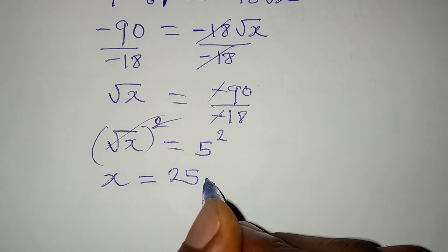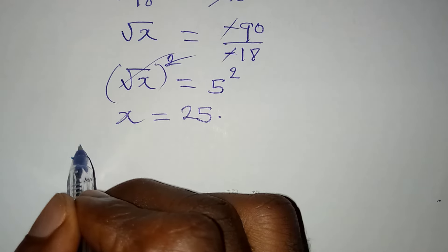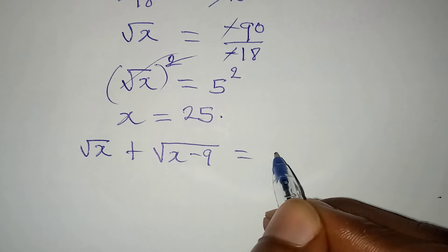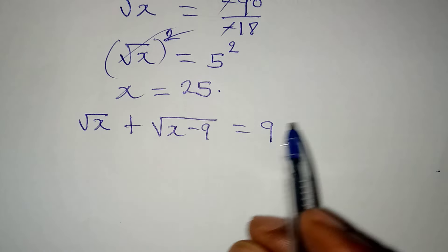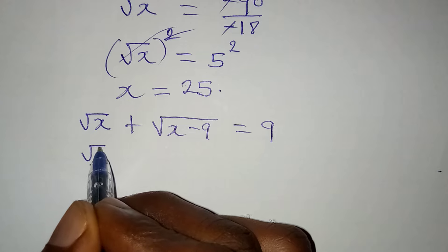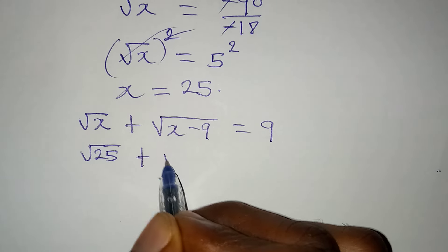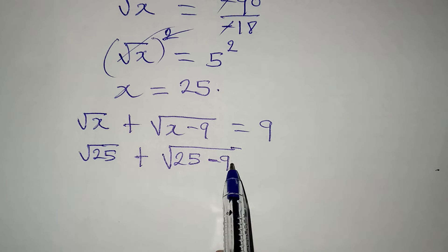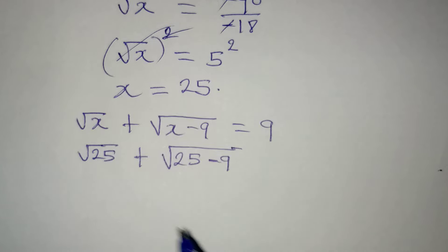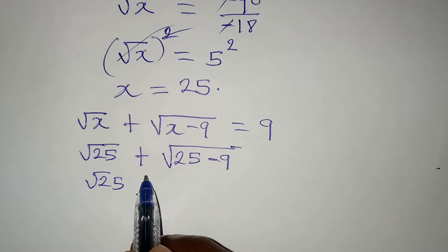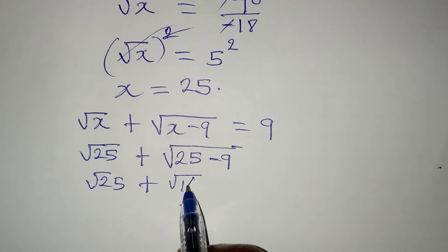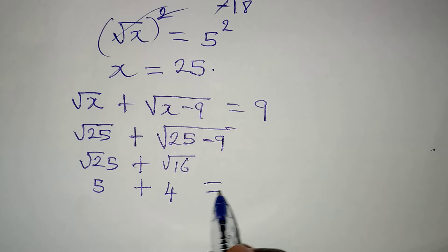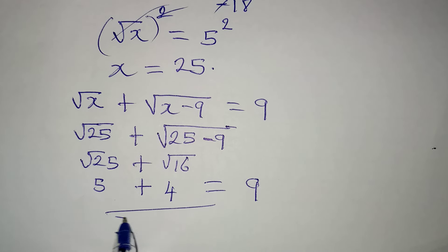Let's verify: the original equation was root x plus square root of x minus 9 equal to 9. Substituting x equals 25: root 25 plus square root of 25 minus 9. Do not find the square roots separately — subtract first: square root of 25 plus square root of 16, which is 5 plus 4, equals 9. We are correct!